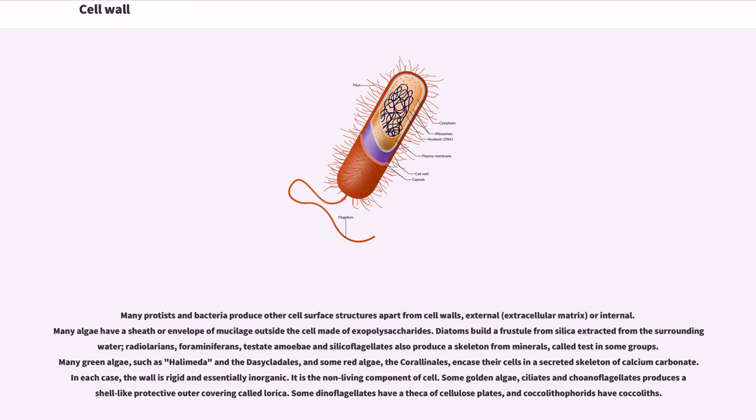Many protists and bacteria produce other cell surface structures apart from cell walls, external, extracellular matrix, or internal. Many algae have a sheath or envelope of mucilage outside the cell made of exopolysaccharides. Diatoms build the frustule from silica extracted from the surrounding water. Radiolarians, foraminiferans, testate amoebae and silicoflagellates also produce a skeleton from minerals, called test in some groups. Many green algae, such as Halimeda and the Dasycladales, and some red algae, the Corallinales, encase their cells in a secreted skeleton of calcium carbonate. In each case, the wall is rigid and essentially inorganic. It is the non-living component of cell.